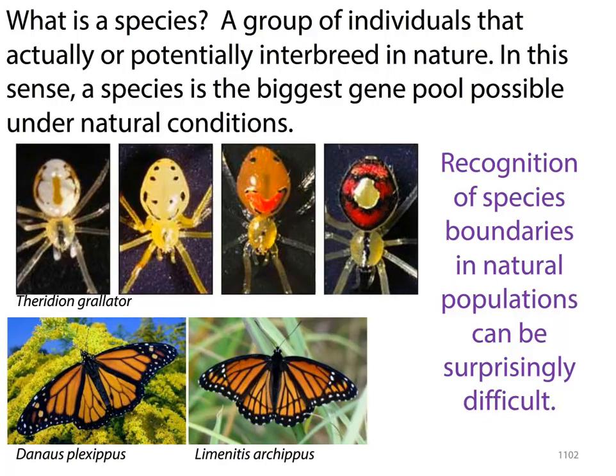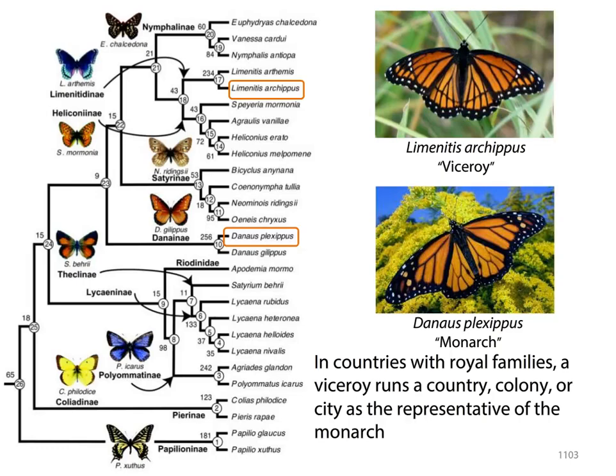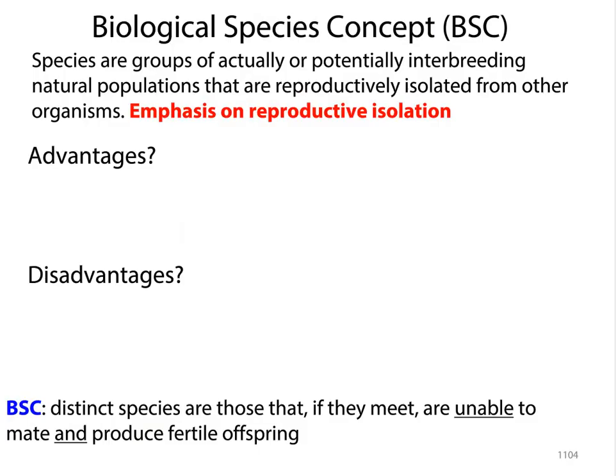Two great examples of two different species that are distinct from one another but look very much alike are the monarch and the viceroy. Monarchs are the ones that eat the milkweed — they're really awesome, absolutely beautiful butterflies. The viceroy is not the same species as the monarch, but if you look at the two of them, they look very, very similar. If you were to see them in the wild, you might not be able to distinguish them, not knowing that they're two different species.